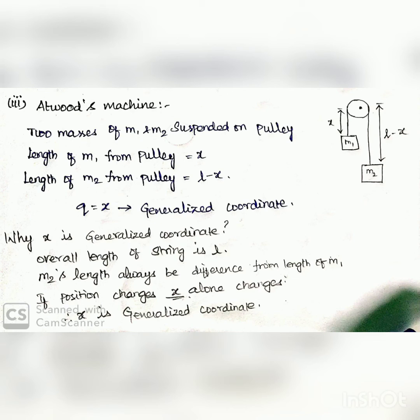Our next example is Atwood's machine. Here, two masses m1 and m2 are suspended on a pulley. Length of mass m1 from pulley is x and length of mass m2 from pulley is L-x. Therefore, the total length will be the sum of L and x. Here, x will be the generalized coordinate.